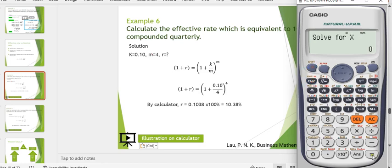Then press equal. So there you go, your answer for the r will be 0.1038. But to fulfill the questions, because the r is the rate, you may need to convert to percentage by multiply with 100 percent, so you end up with 10.38 percent.